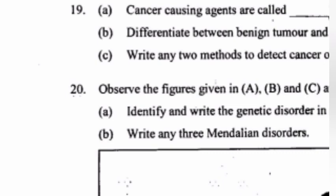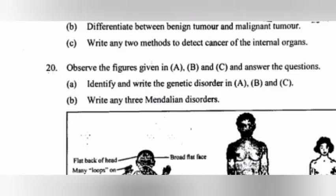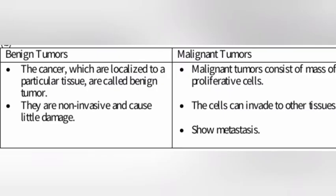Question 19: a) Cancer-causing agents are called carcinogens. b) Differentiate between benign tumor and malignant tumor. Answer: Benign tumor – cancers localized to a particular tissue; they are non-invasive and cause little damage. Malignant tumor – consists of a mass of proliferating cells; the cells can invade other tissues and show metastasis.